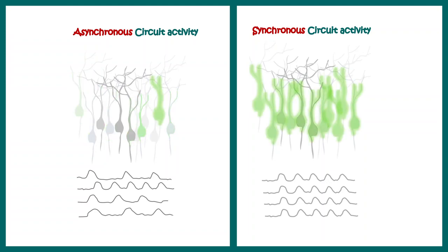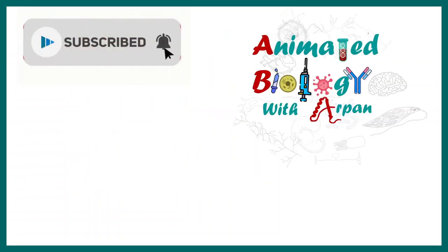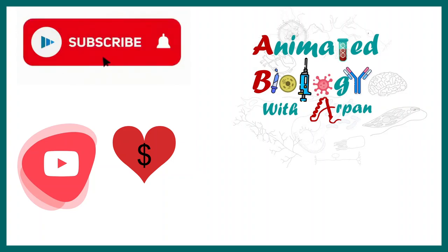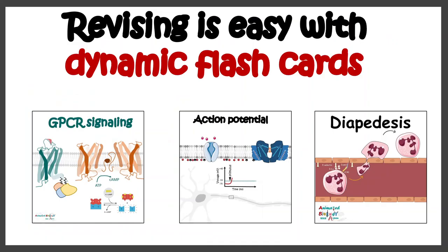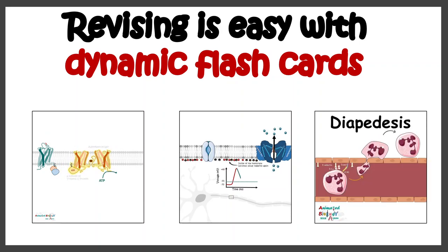There are many other advantages of two photon microscopy not discussed in this video. To summarize: we looked at the principle of two photon microscopy, the components and light path, and one application in neuroscience. Further notes and dynamic flashcards are available on the Facebook channel linked in the description. Don't forget to subscribe and hit the bell icon.